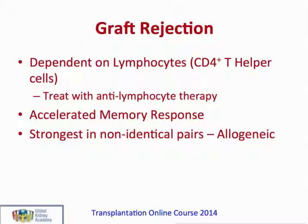So they had shown that graft rejection was dependent on lymphocytes, and it was later proved that CD4 positive T helper cells were the main cell type involved in this process. This led to the rationale for treatment, which was to use drugs known to be effective at killing lymphocytes, such as those used in lymphoma and other treatments such as total body irradiation. They had also proven the existence of an accelerated memory response when a second graft was transplanted, and shown that rejection was strongest when pairs were non-identical — transplants between non-identical pairs are called allogeneic transplants.